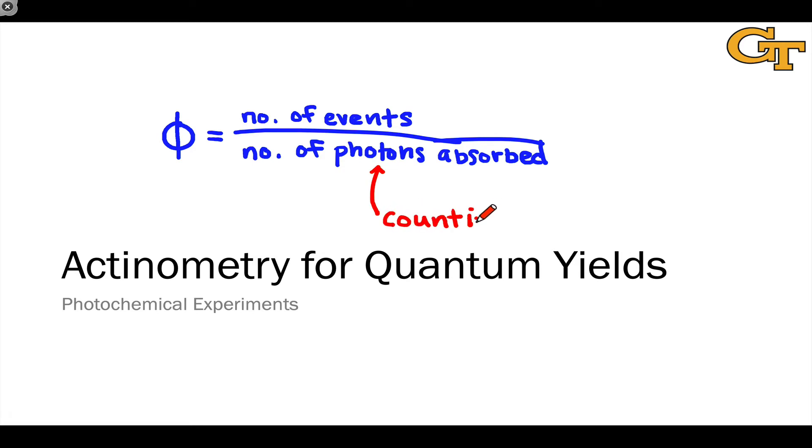Measuring the product yield is trivial when comparing it to the stoichiometry of our starting substrate. The tricky part here is counting photons.